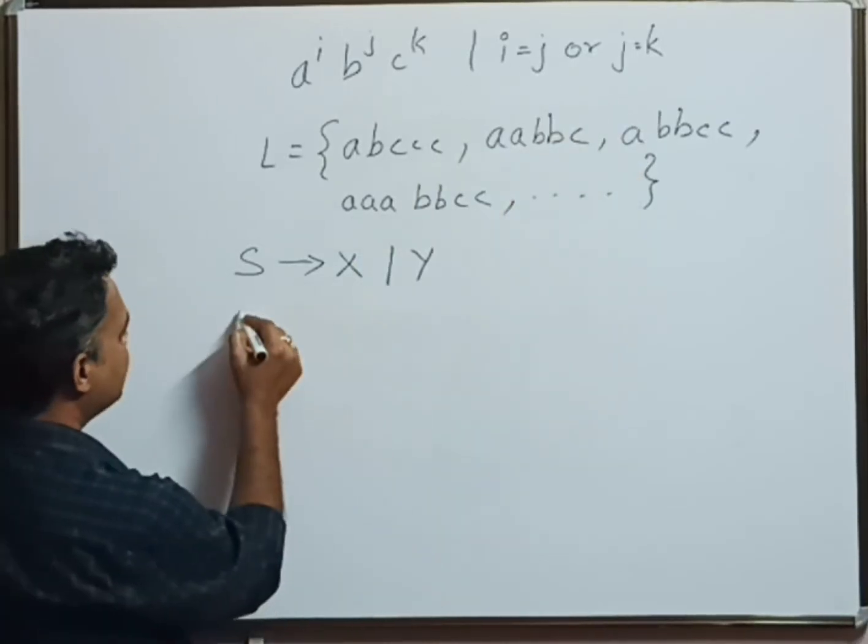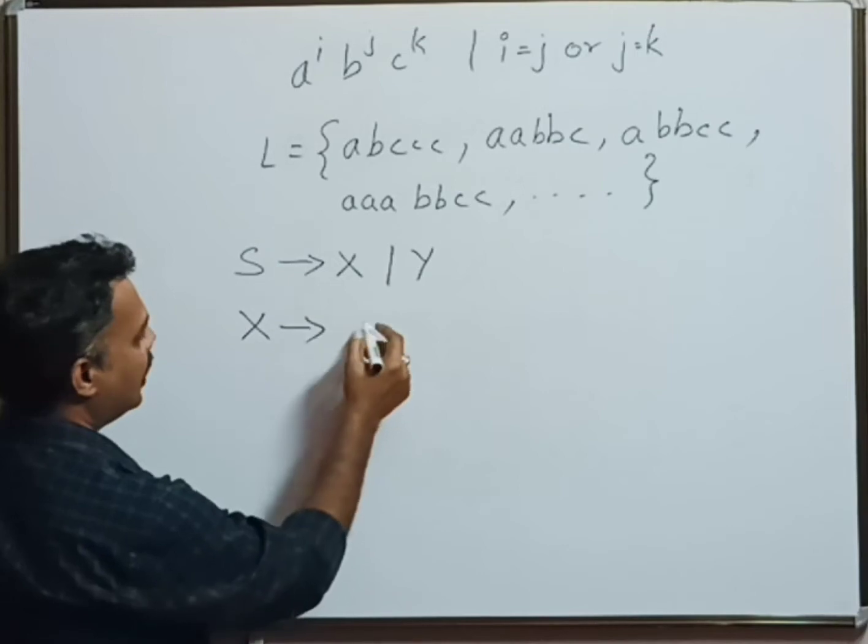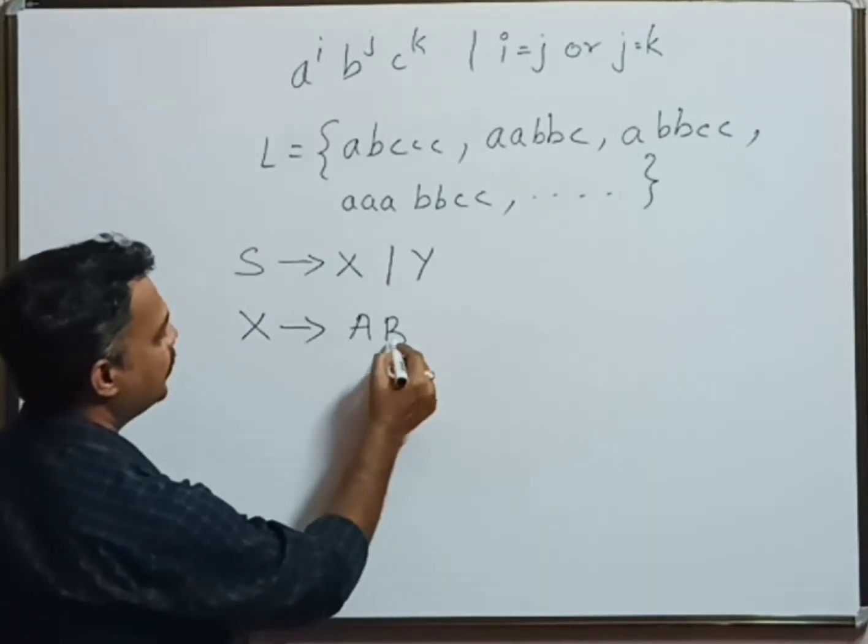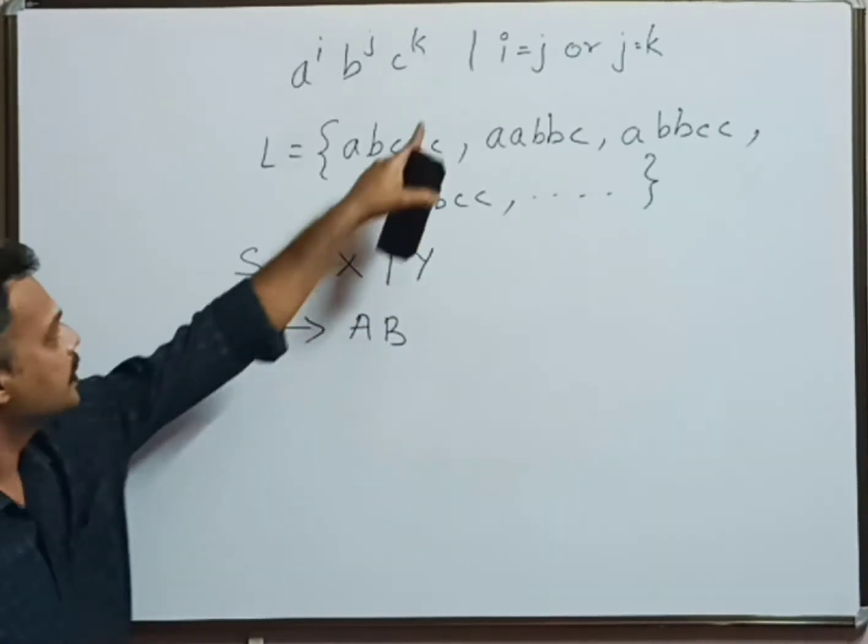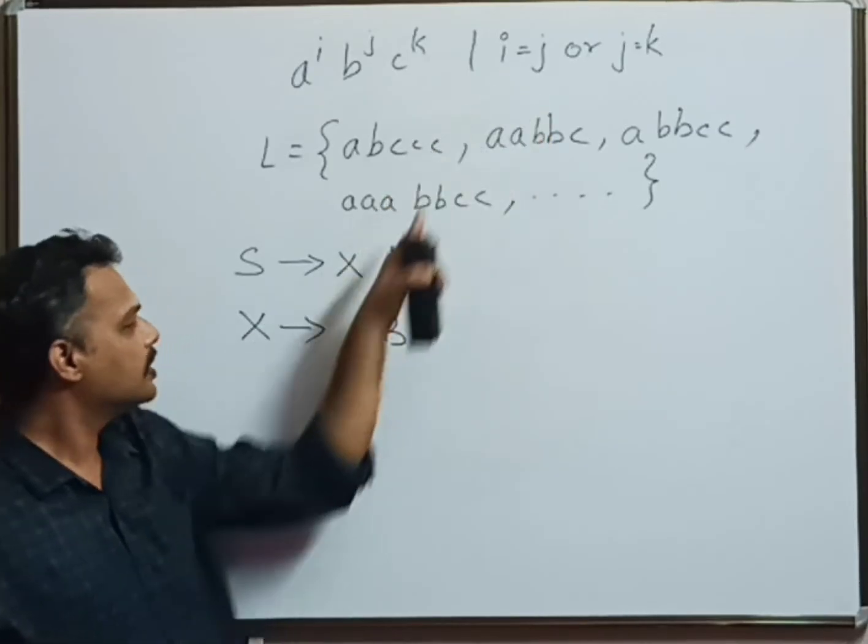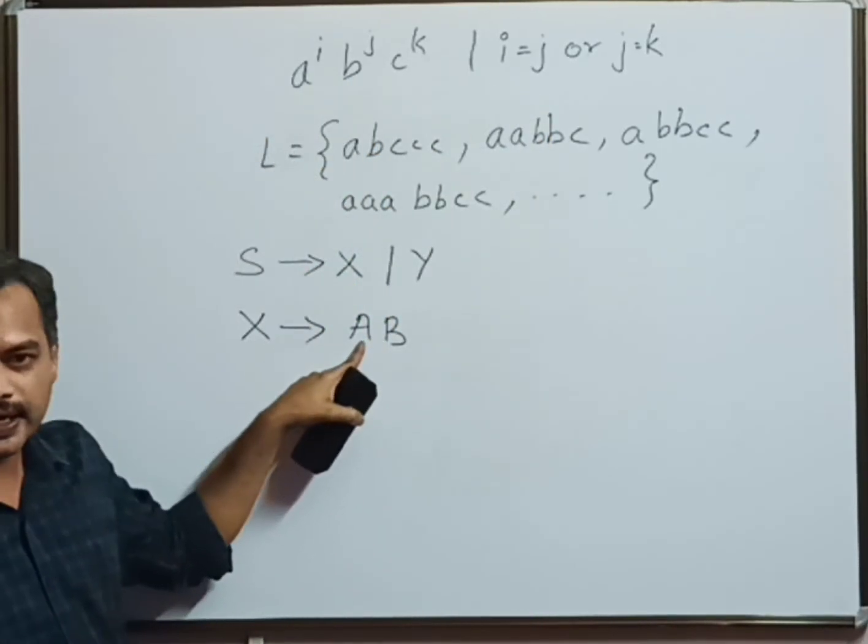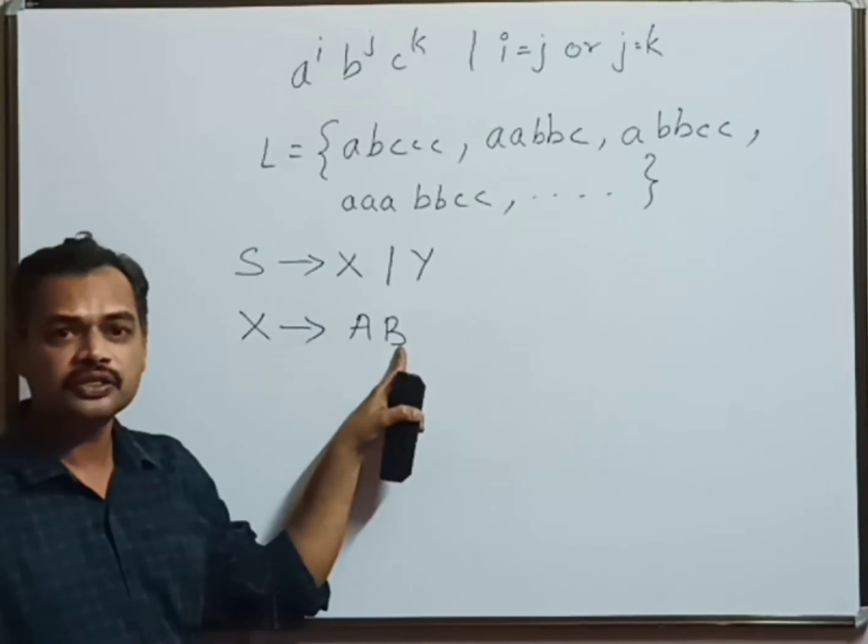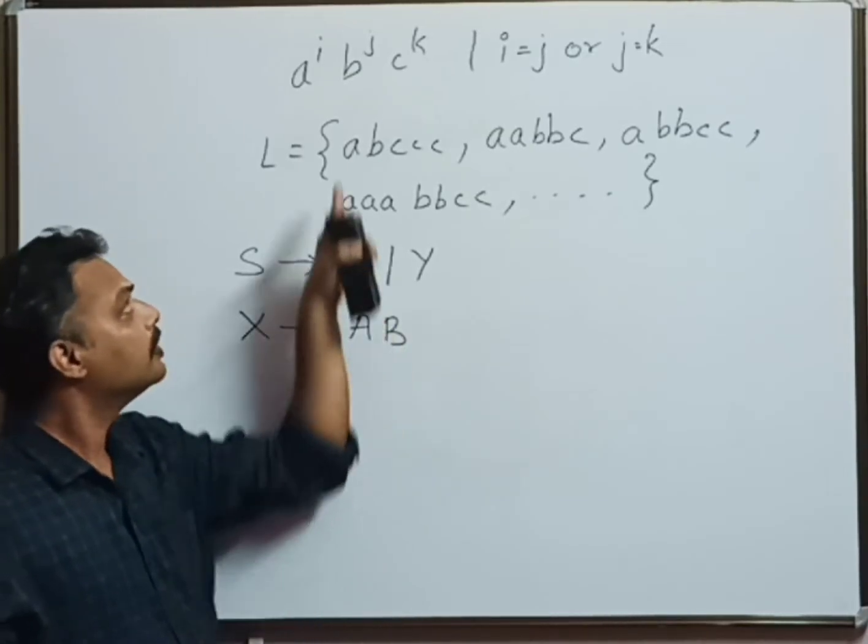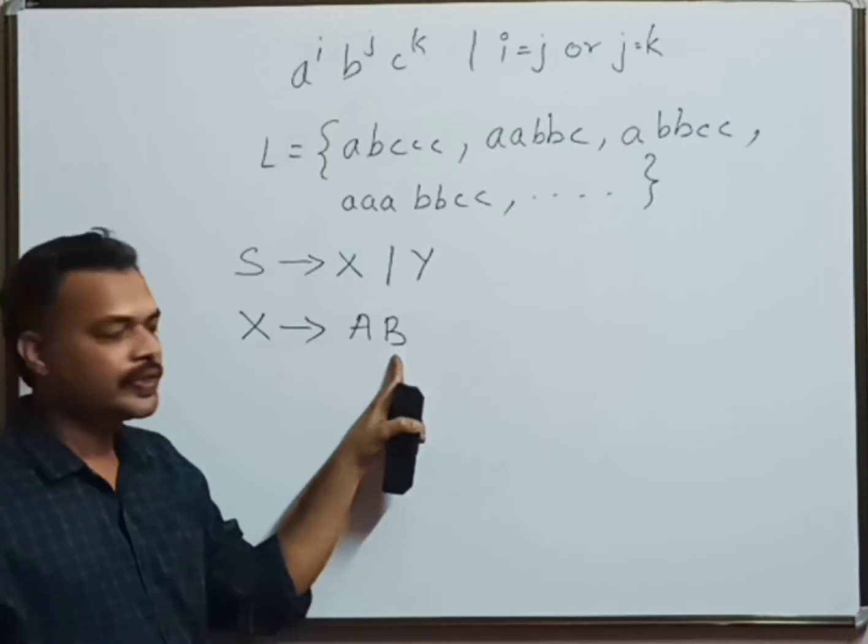Now let us expand X. For X, for this condition, number of a should be equal to number of b, and that is taken care by A. Whatever be the number of occurrences of c will be taken care by B. So X goes to AB.